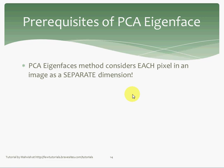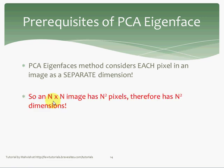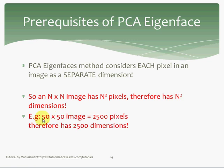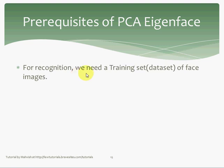For recognition, we need a training set or a dataset of face images — a dataset containing M images. All faces must be of the exact same size; that is the implication of the point that dimensions must be the same. So if images are 50×50, then each image would have 2,500 dimensions.